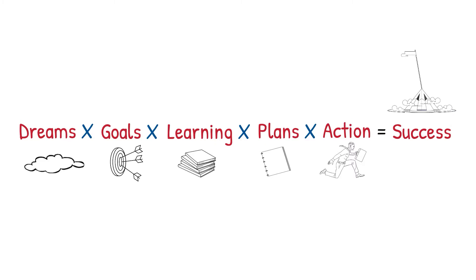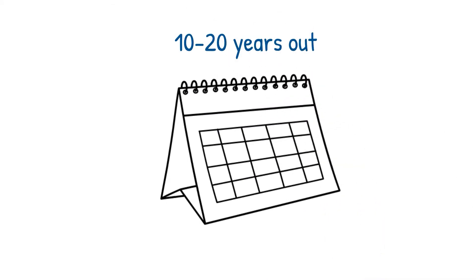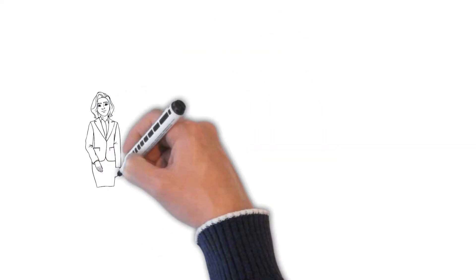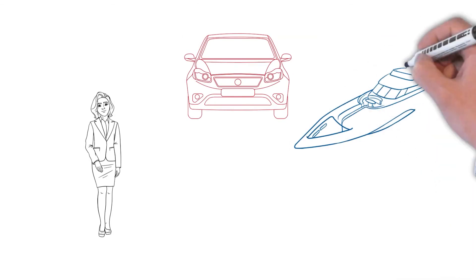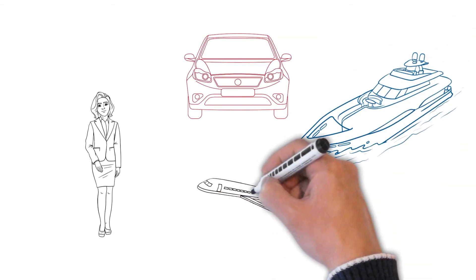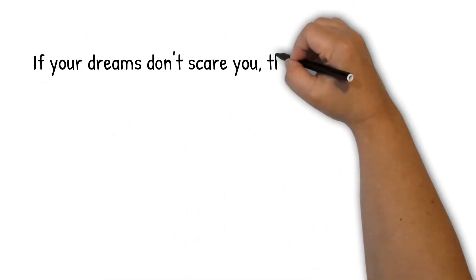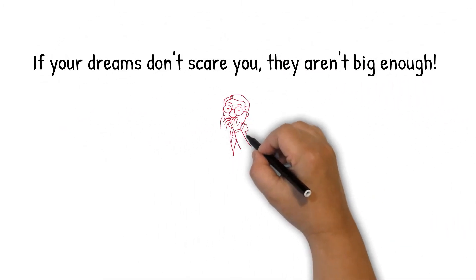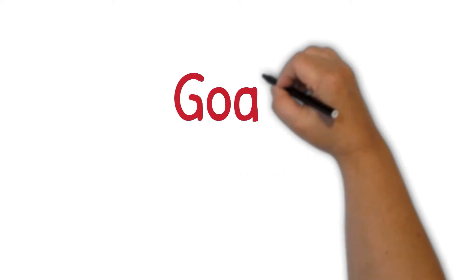We start with Dreams. Dreams are those things that are 10 to 20 years out — they're massive, and you don't even know how they'll become a reality, but they're things where you sit back and think, 'Wow, wouldn't that be amazing?' You've got to let yourself dream big. If your dreams don't scare you or excite you, they're not big enough.